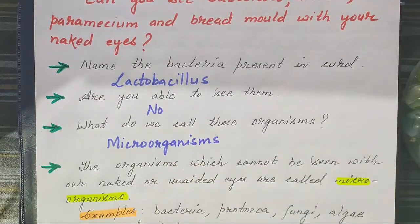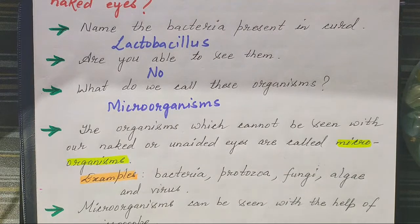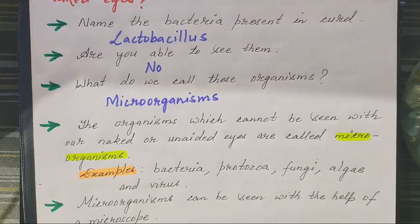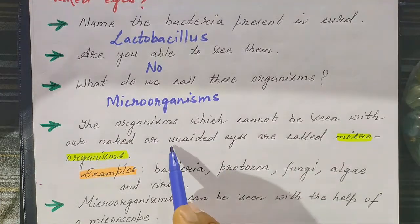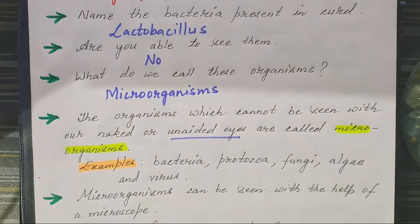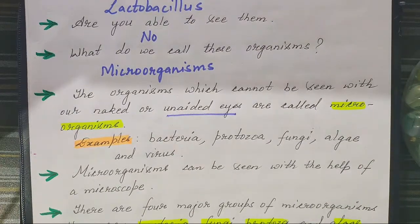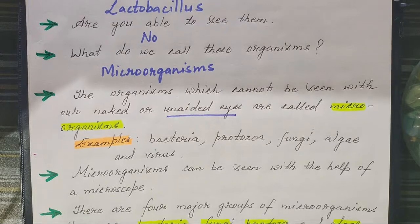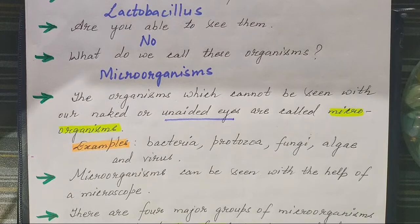What are microorganisms? The organisms which cannot be seen with our naked or unaided eye — that means without using any kind of instrument — are called microorganisms. Examples of microorganisms are bacteria, protozoa, fungi, algae, and virus.